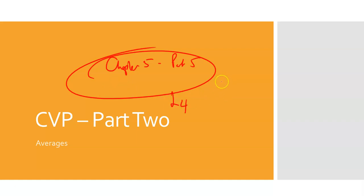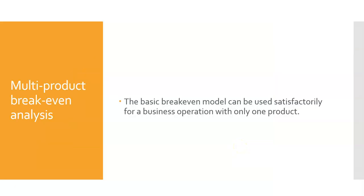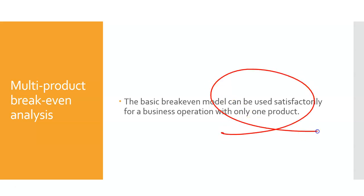If we're selling one product, we have a price of £50, we're selling it for £25, the contribution becomes £25, we have fixed costs of £25,000, and therefore in order to breakeven we need to sell a thousand units. So this was very nice. But we know in reality this is not the truth — we're not just dealing with one product.